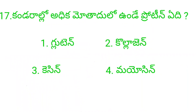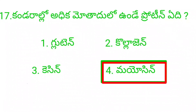Q: Which is a protein? Option 1: Gluten. Option 2: Collagen. Option 3: Cacin. Option 4: Myosin. Myosin — Option 4 is the right answer. Next question.